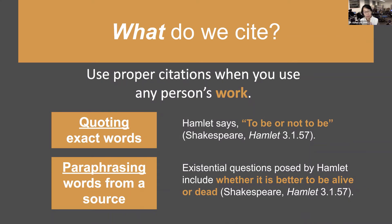Use proper citations when you're quoting or paraphrasing. Students who are new to citing are often unclear about the distinction. Quoting is when you're using exact words from a source — for example, Hamlet says 'To be or not to be' in quotes; you are quoting Hamlet, which is part of a drama by Shakespeare, so you cite that with a parenthetical citation. But paraphrasing means you're using your own words to summarize what Hamlet is saying — for instance, 'Existential questions posed by Hamlet include whether it is better to be alive or dead.' You're not using exact language, but you're paraphrasing, so it's still not your idea and you still need to cite it.